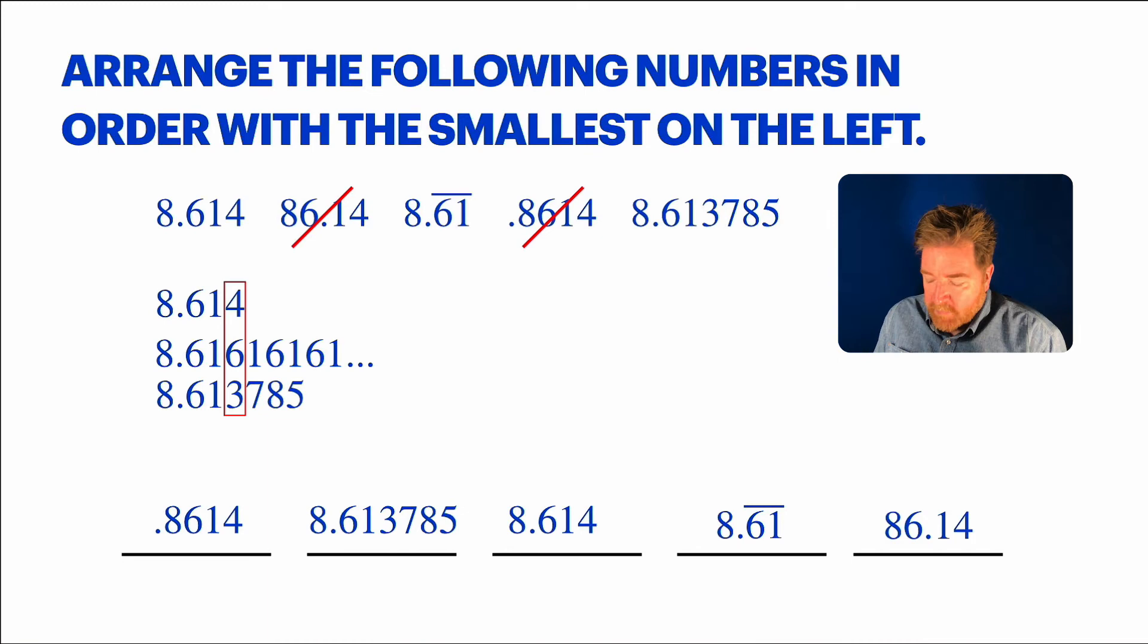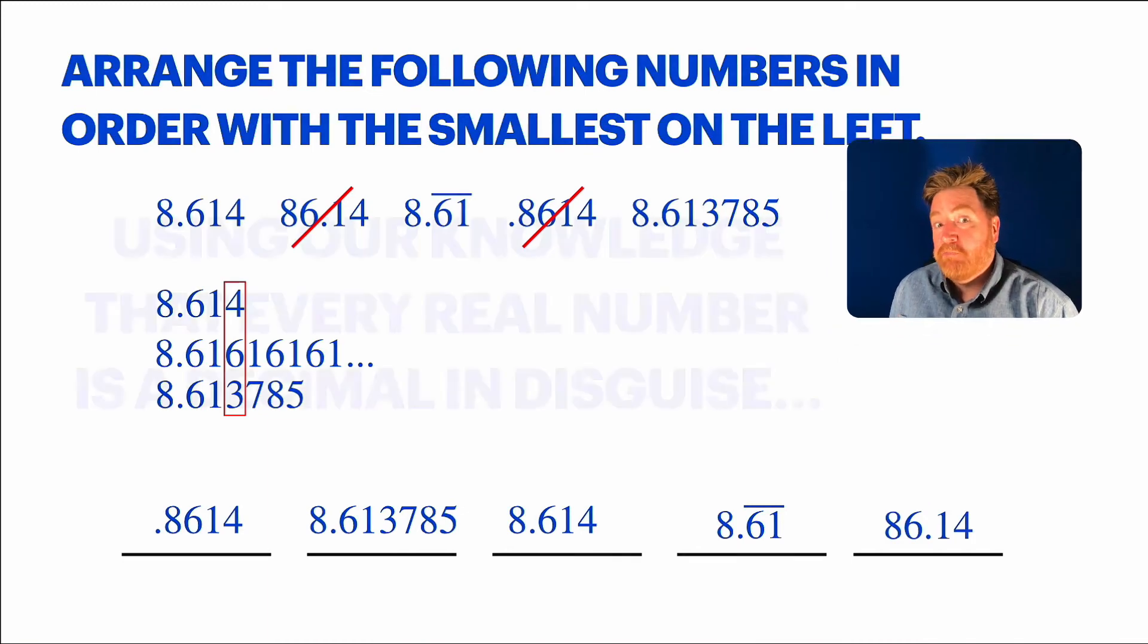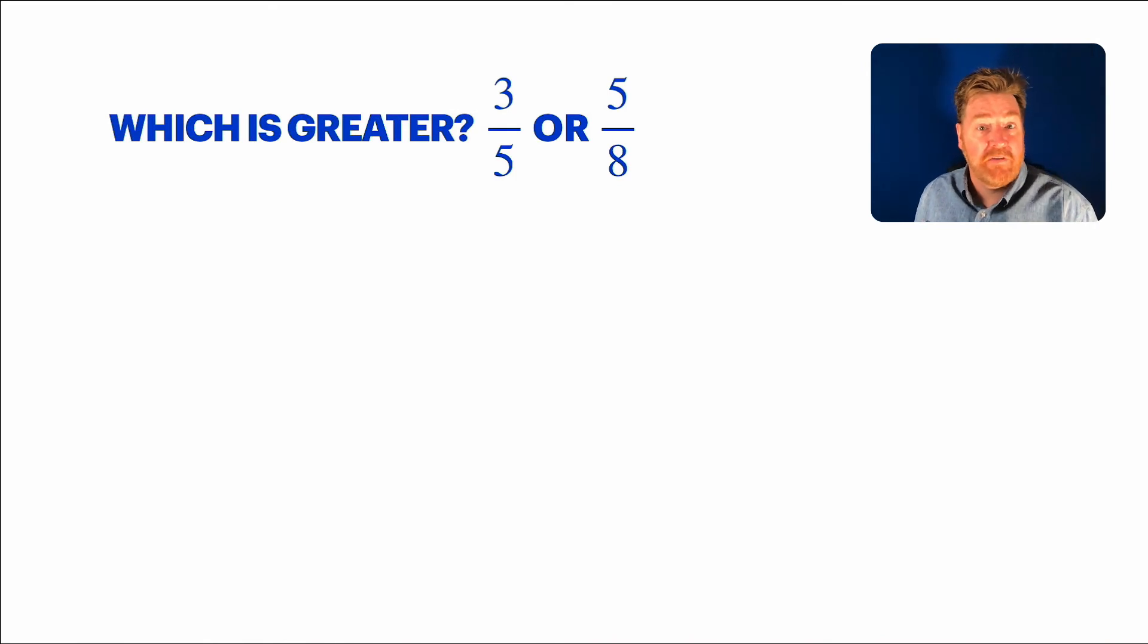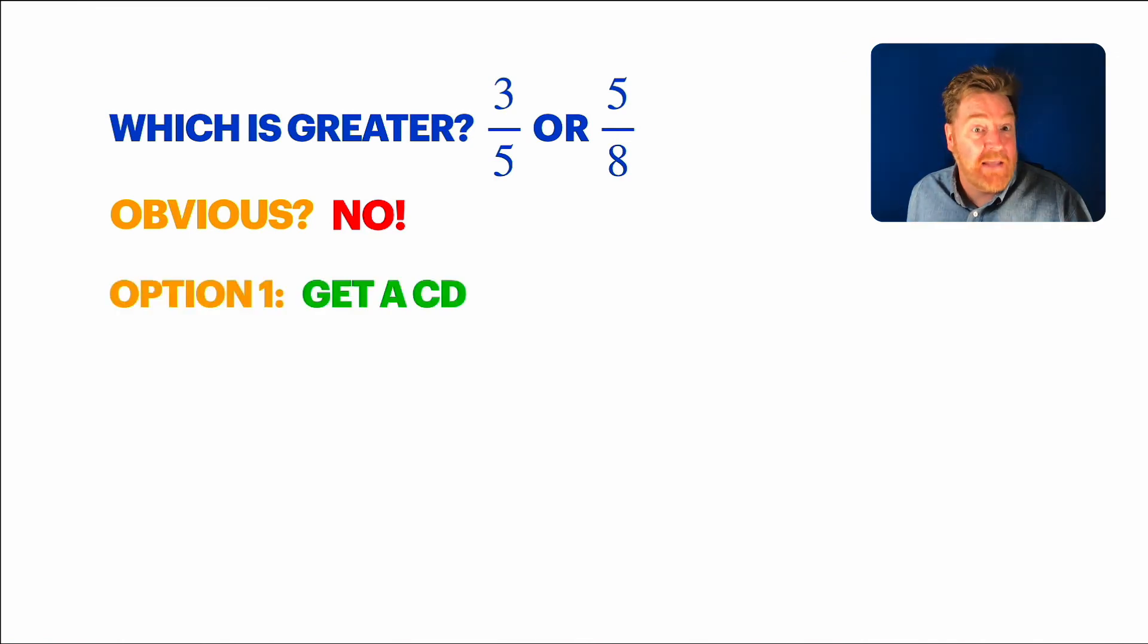I think this idea about every number being a decimal, that's going to help us out. We might be able to use this in some things that we did before. Like, for example, if you want to know which is greater, 3/5 or 5/8, this is a problem we did a while back. Maybe our knowledge of decimals can help us with this. First of all, wait, is this an obvious comparison? Do they have the same denominators? No. Same numerators? No. Okay, it's not obvious for that. Less than a half, bigger than a half? No, they're both bigger than a half. So, this is not obvious. So, in the past, what we would do is we would get a common denominator, and that would make it obvious. But now, here's a new option. What if we converted them both into decimals?